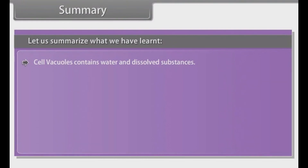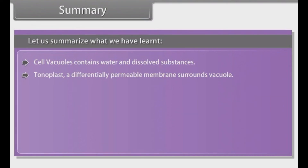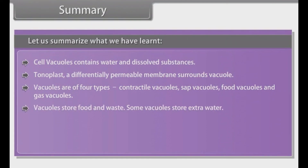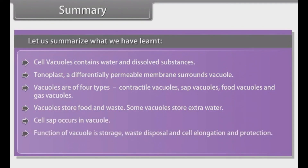Cell vacuoles contain water and dissolved substances. Tonoplast, a differentially permeable membrane, surrounds the vacuole. Vacuoles are of four types: contractile vacuoles, sap vacuoles, food vacuoles and gas vacuoles. Vacuoles store food and waste; some vacuoles store extra water. Cell sap occurs in the vacuole. The function of the vacuole is storage, waste disposal, cell elongation and protection.